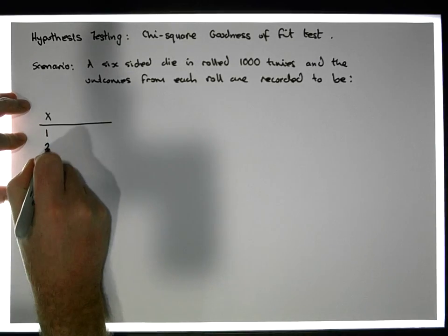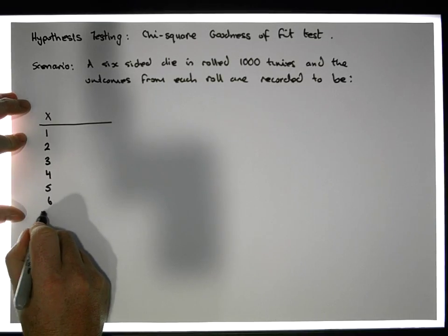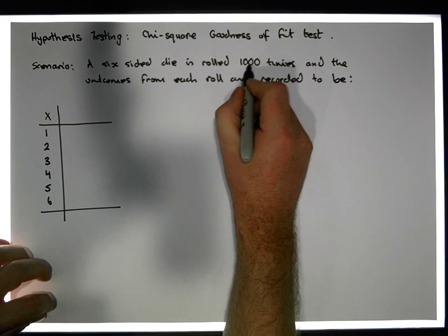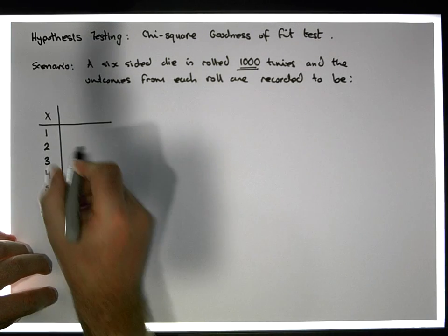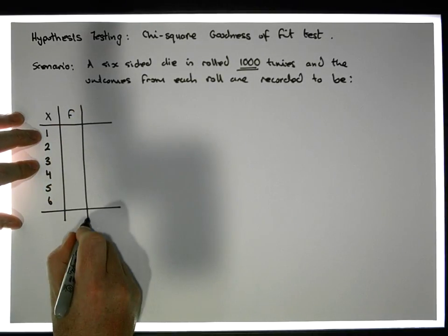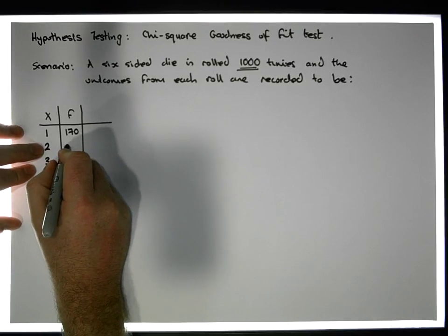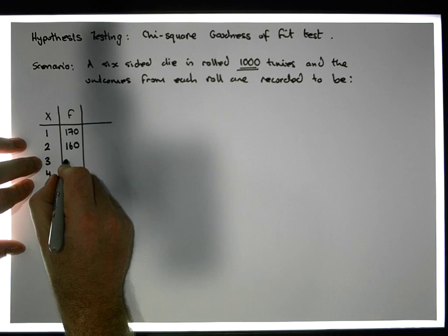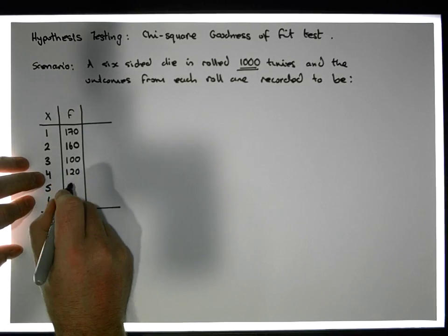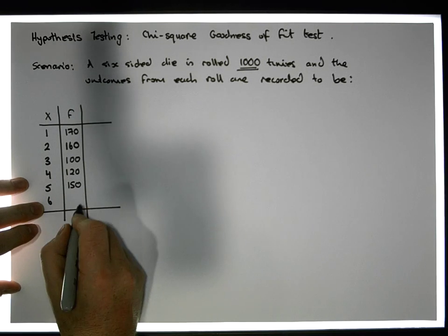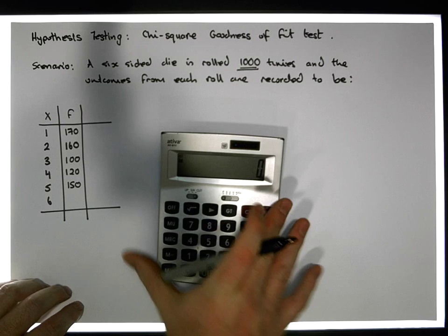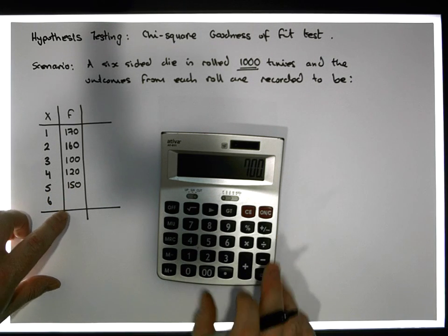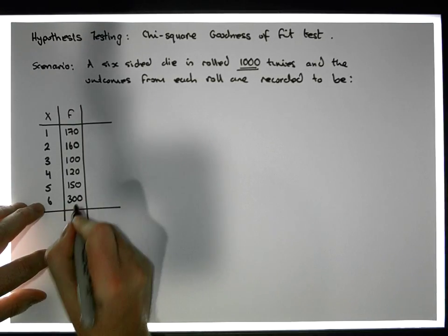The outcomes when we roll the die are the values 1, 2, 3, 4, 5, and 6 - the possible outcomes. The observed outcomes when we rolled this die 1000 times are: 1 occurred 170 times, 2 occurred 160 times, 3 occurred 100 times, 4 occurred 120 times, 5 occurred 150 times. That gives us 700 total, so 6 occurred 300 times out of 1000 rolls.